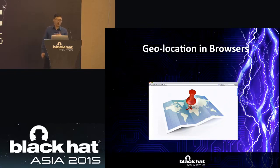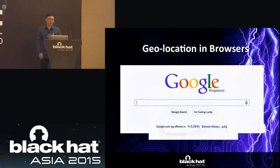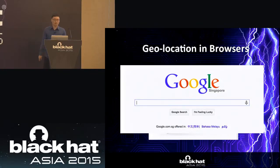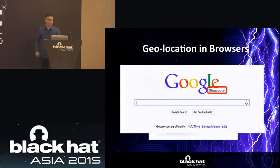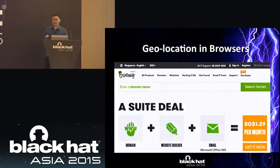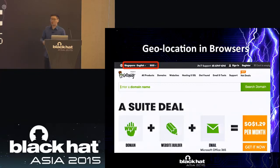Nowadays, browsers and websites often access our geolocations to provide customized services. For example, when we visit Google.com, it will automatically redirect us to our country's Google website — like visiting Google in Singapore takes us to the Singapore version. Similarly, when we visit GoDaddy, it provides country-specific sites, with all prices in Singapore dollars and services customized for Singapore.